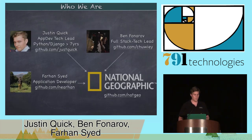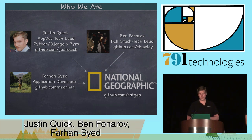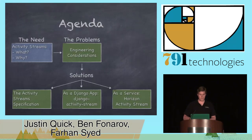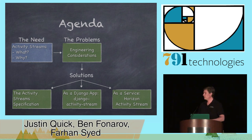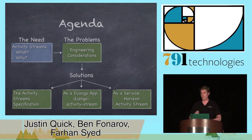I'm Justin Ben-Farhan. We all work at National Geographic, which uses a lot of Django on some of our sites, and we've been doing this for a while. Here's the agenda: we're going to talk about activity streams — what they are, why you should care about them on your site, some of the engineering concerns around implementing them, and then the open specification, and two solutions: one expressly in Django, and the other as a service that can work for any website.